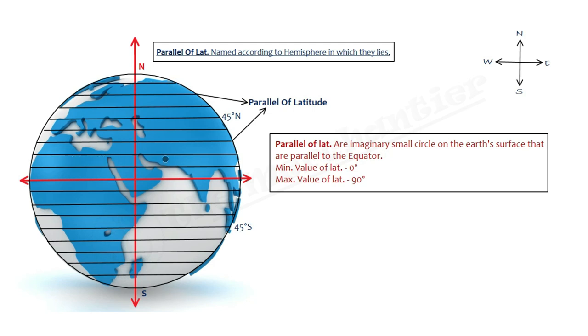If we talk about parallel of latitude and it is Northern Hemisphere, we will name it accordingly. This is 45 degree angle and this is Northern Hemisphere, so we will point out north.